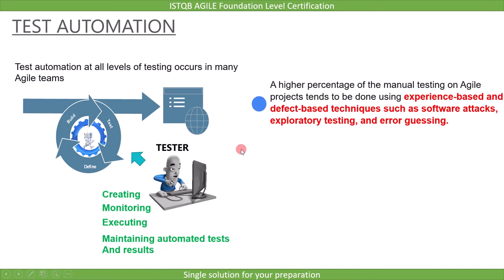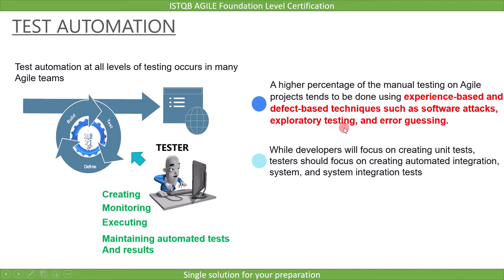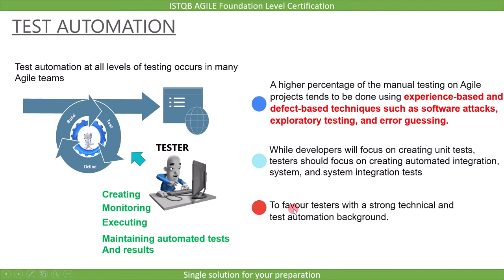Because of the heavy use of test automation, a higher percentage of manual testing on Agile projects tends to be done using experience-based and defect-based techniques such as software attacks, exploratory testing, and error guessing. While developers focus on creating unit tests, testers should focus on creating automated integration, system, and system integration tests. This leads to a tendency for Agile teams to favour testers with a strong technical and test automation background.